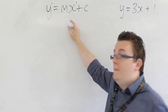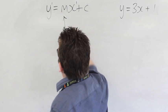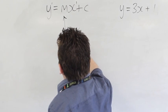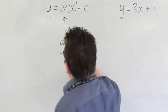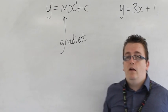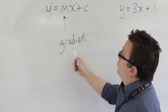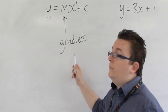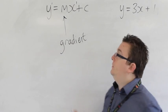What you need to remember from that is that the m represents the gradient of the line. OK, because these are all straight lines. The m represents the gradient, how steep the line is. And we're going to look at that in a bit more detail in the next video.